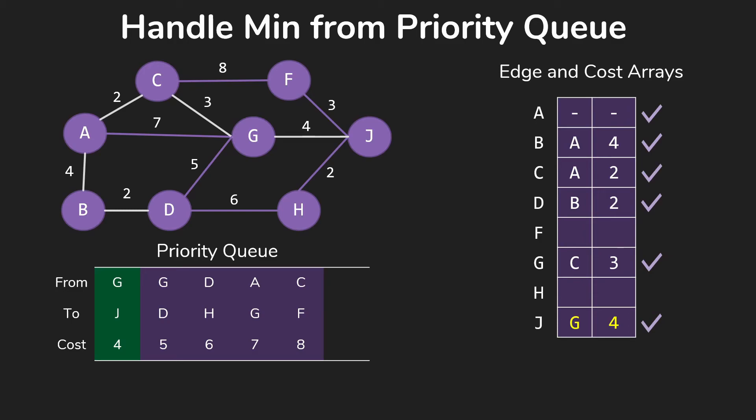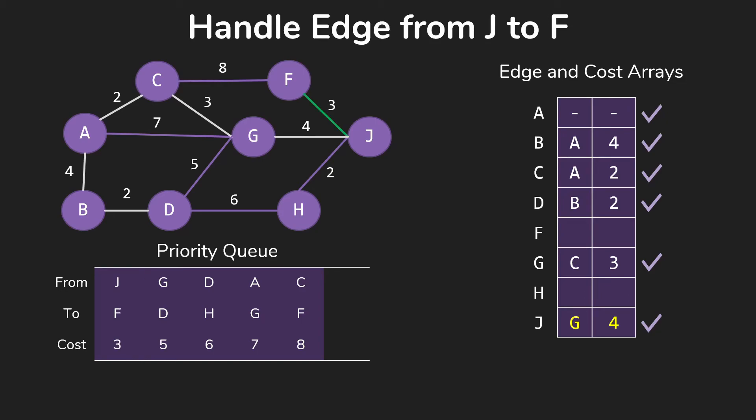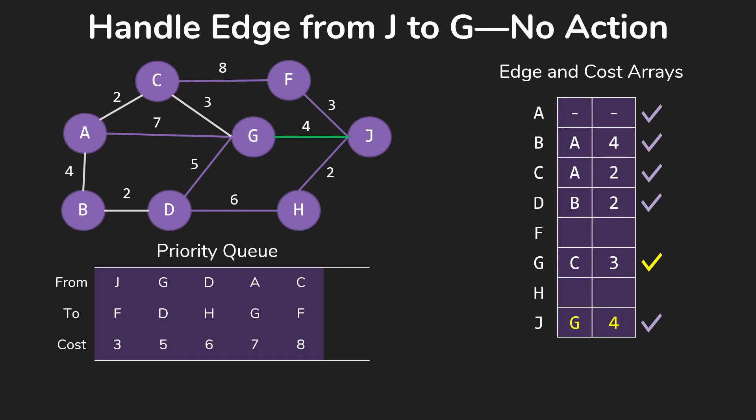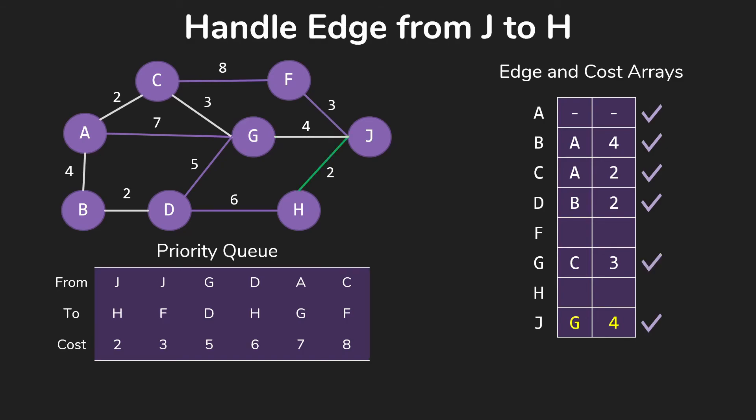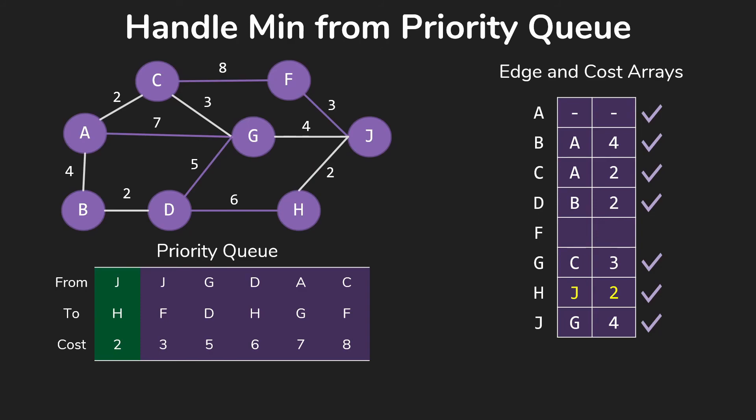Smallest thing now is our edge from G to J for 4. So we add that to our tree and start looking at its edges. So JF for 3 we add to the queue. G we already have in our tree, so that doesn't do anything. And JH for 2 we add to our queue. That's all the edges out of J, so we check our loop conditions.